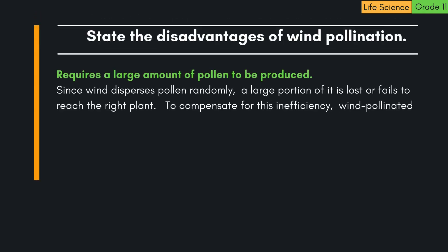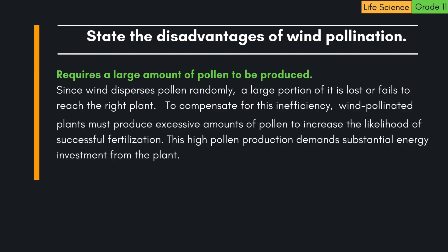2. Requires a large amount of pollen to be produced. Since wind disperses pollen randomly, a large portion of it is lost or fails to reach the right plant. To compensate for this inefficiency, wind-pollinated plants must produce excessive amounts of pollen to increase the likelihood of successful fertilization. This high pollen production demands substantial energy investment from the plant.